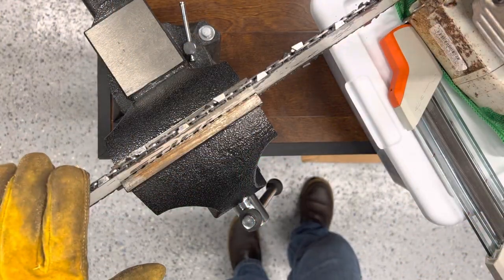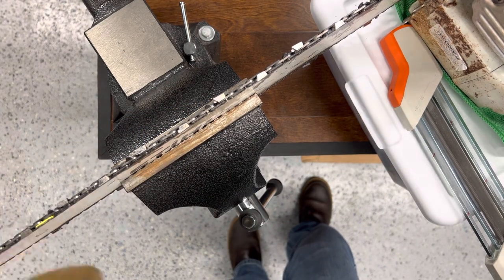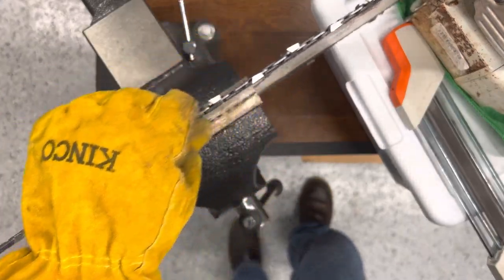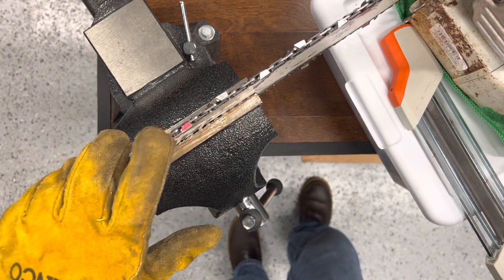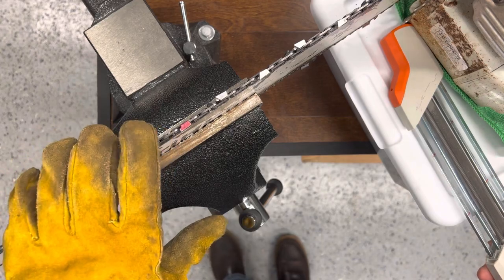All right, after we verified that the chain is level with the ground, we can take our brake off. Make sure you have gloves on, you don't want to cut yourself. Make sure the chains run smoothly. And now I took a red marker and I marked the first tooth that I'm going to be working on. So now we're ready to sharpen.